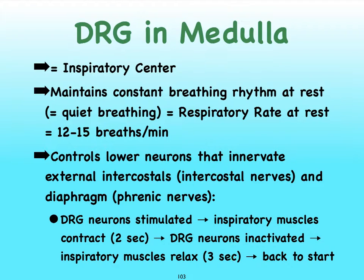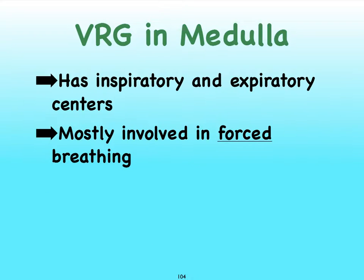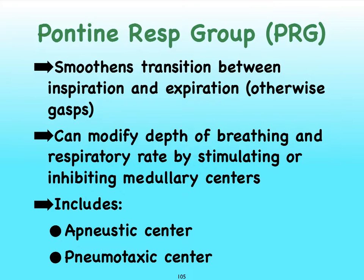That relaxation takes about 3 seconds, completing the cycle as the DRG neurons become stimulated again. The ventral respiratory group is mostly involved in forced breathing, including both forced inspiration and forced expiration. This brings us to the pons, where we have the pontine respiratory group, or PRG. There are two pontine centers: one is called the apneustic center and the other is called the pneumotaxic center.